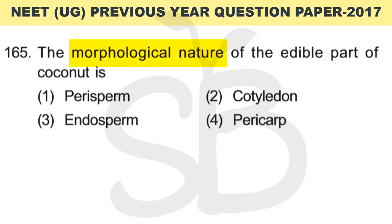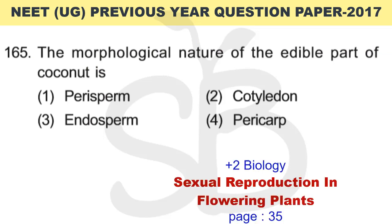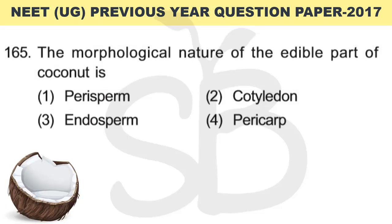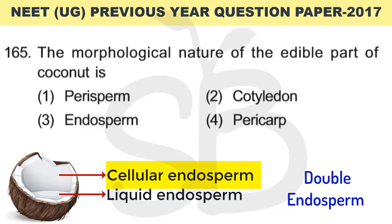Question number 165: The morphological nature of the edible part of the coconut is? This is from Plus 2 biology, chapter: Sexual Reproduction in Flowering Plants, page number 35. The correct answer is option 3: endosperm. In coconut, there is a double endosperm — liquid endosperm and cellular endosperm. Usually when the seed matures, the endosperm persists. Examples include castor and coconut, where the endosperm is the edible part.